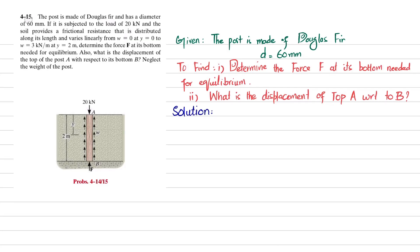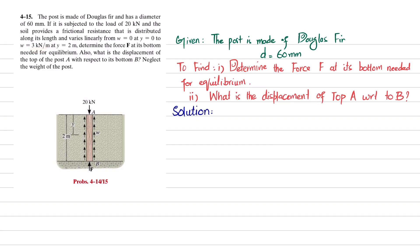Welcome back. Problem 4-15. The statement is that the post is made of Douglas fir and has a diameter of 60 millimeters. It is subjected to a load of 20 kilonewtons and the soil provides a frictional resistance that is distributed along its length and varies linearly from w equals zero at y equals zero to 3 kilonewtons per meter at y equals 2 meters. Determine the force F at its bottom needed for equilibrium. Also, what is the displacement of the top of post A with respect to its bottom B? Neglect the weight of the post.